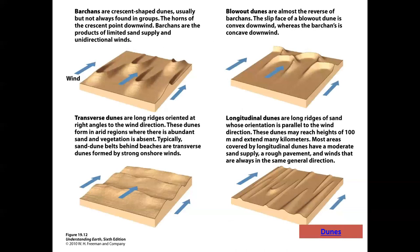Dunes can have all sorts of different shapes. One popular one that gets talked about a lot is Barkhan dunes, which are horseshoe-shaped, and the tails of which point downwind.